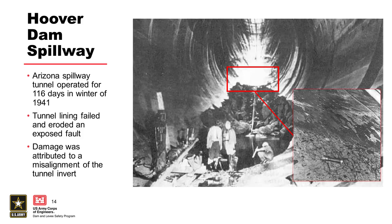Hoover Dam experienced some pretty significant cavitation damage after construction. Both Hoover Dam and Glen Canyon Dam are USBR dams on the Colorado River that used the original diversion tunnels as part of the emergency spillway. The river diversion tunnels are relatively flat, and the spillways were constructed after the fact and tied into those, creating high-velocity zones and then elbows. This cavitation was due to a misalignment of a joint at the transition between the steep spillway section and the tunnel section.